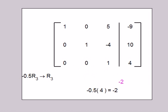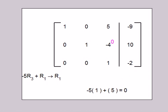Finally, use this one to zero out the non-zero entries above it, by first adding negative 5 times row 3 to row 1. Follow this with adding 4 times row 3 to row 2.